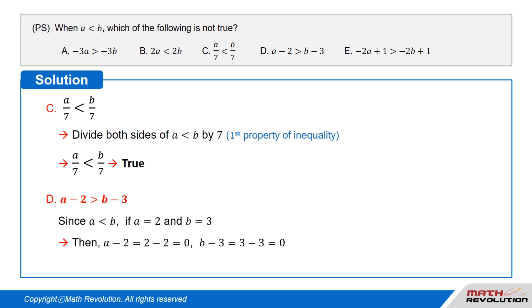Option D: a minus 2 is greater than b minus 3. Since a is less than b, let a equal 2 and b equal 3. Then a minus 2 equals 2 minus 2, which equals 0, and b minus 3 equals 3 minus 3, which also equals 0. So a minus 2 equals b minus 3, not greater than. Thus this option is not true.